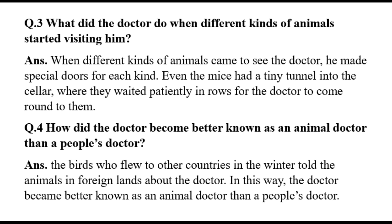Question three: What did the doctor do when different kinds of animals started visiting him? The answer is when different kinds of animals came to see the doctor, he made special doors for each kind. Even the mice had a tiny tunnel into the cellar where they waited patiently in rows for the doctor to come round to them.